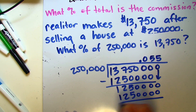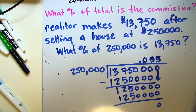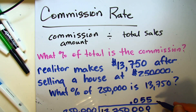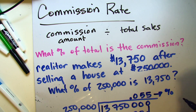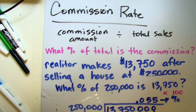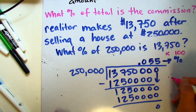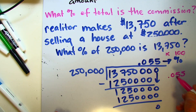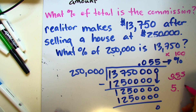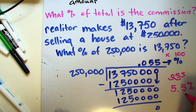Earlier we talked about converting this rate to a percent, and to do that we're going to multiply by one hundred. Point zero five five times one hundred is essentially moving that decimal place over two spaces to the right, and our commission rate is now going to be five point five percent.